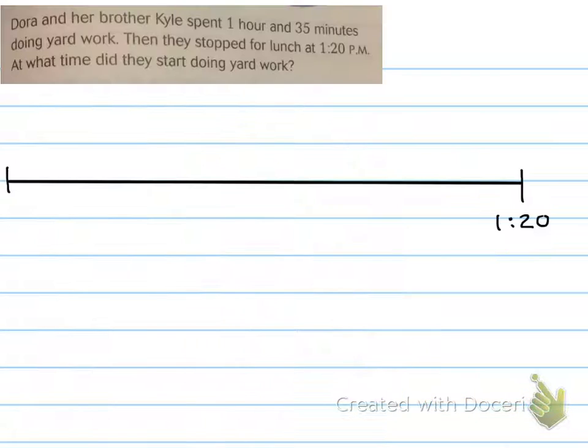Okay. Let's look at a couple of elapsed time problems. Dora and her brother Kyle spent one hour and 35 minutes doing yard work. Then they stopped for lunch at 1:20 PM. At what time did they start doing yard work? Dora and her brother... Well, that's pretty nice. They're doing some yard work. Maybe they were doing it on a weekend. And then, okay, they did it before lunch. They spent an hour and 35 minutes doing all that yard work. I wonder what they were doing. Maybe mowing the lawn. Okay. Stopped for lunch at 1:20 PM. What time did they start, oh man, doing the yard work?